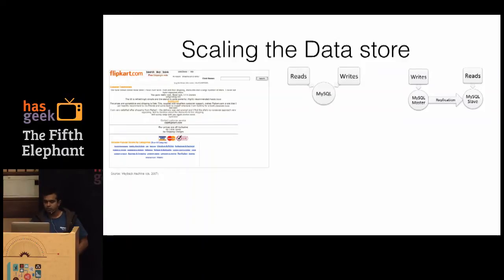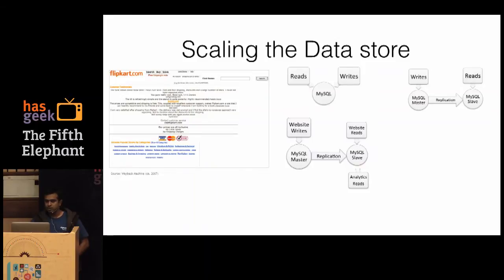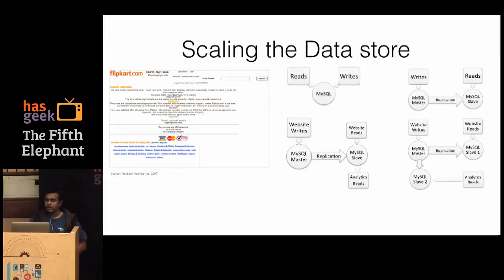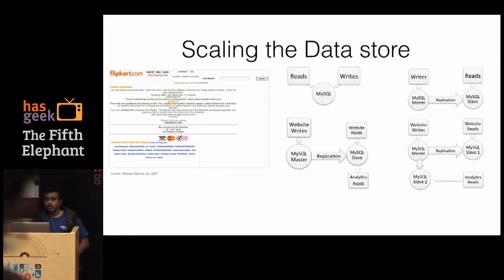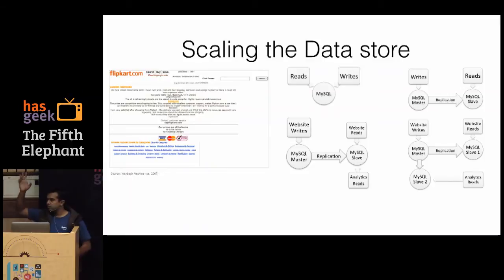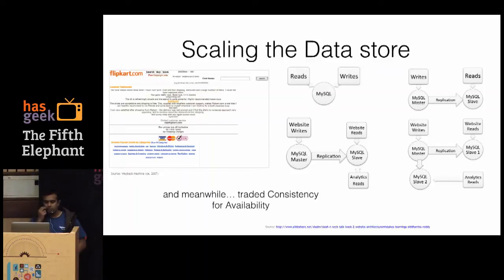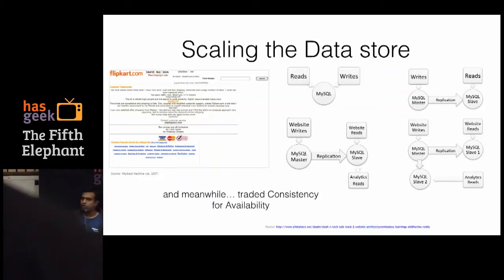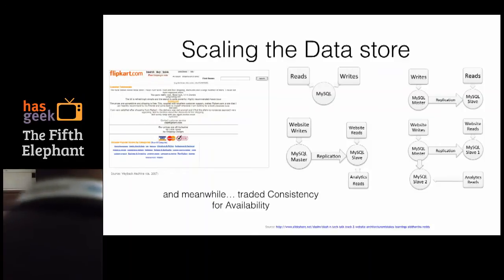Like anyone else, we moved to doing reads from a slave and had MySQL replication going. We also had analytic reads going off the same slave — that wasn't working. So we added more slaves: one dedicated for online reads and another for analytical reads. A very common pattern. Over time we realized we had traded consistency for availability and higher performance.